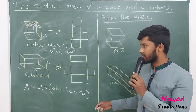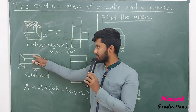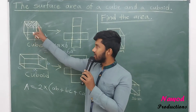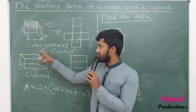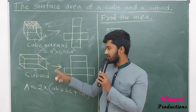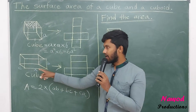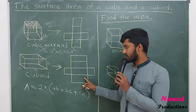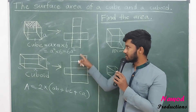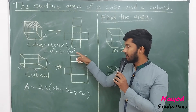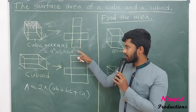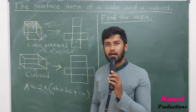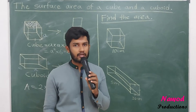For a cube, all sides are equal, so we multiply by six. For a cuboid, we cannot multiply by six because all sides are not equal. You can also see this difference by comparing the net of a cube and the net of a cuboid. After that, we will solve some example questions.